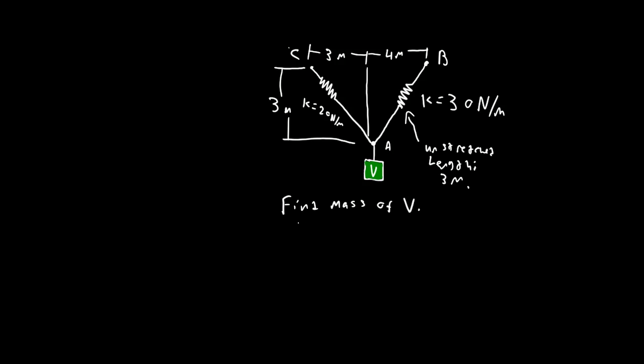We'll start with finding the length of AB. That's square root 3 squared plus 4 squared equals 5 meters. So we get that this is 5 meters long now and its unstretched length is 3 meters. So the stretch is 2 meters.